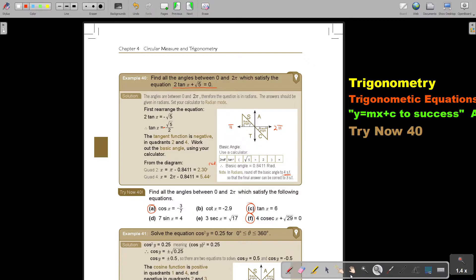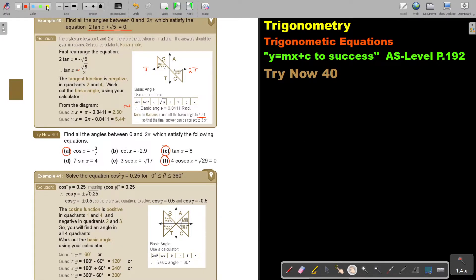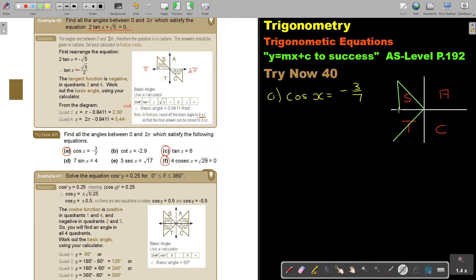Let's start with number a. This is going to be cos x equals negative 3 over 7. This is my cos diagram. Cos is negative where? There's cos positive, so cos will be negative here and here.